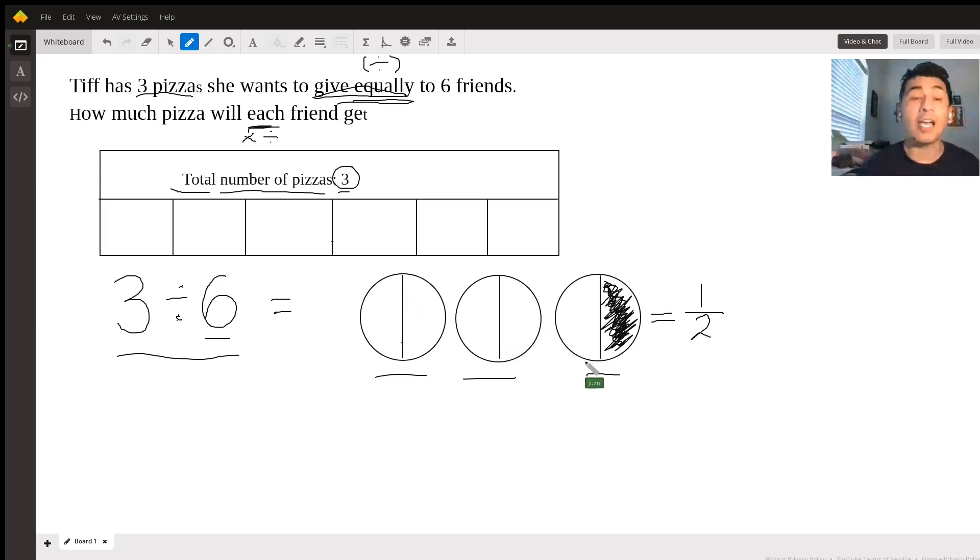Since each friend is going to receive a sixth part, we already know that this part, the part that is already shaded, is the part that each friend is going to receive. You know your fractions. This fraction represents one half.